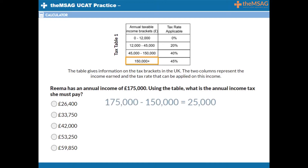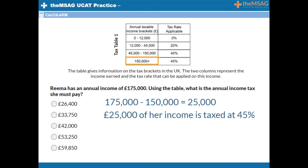£175,000 minus £150,000 means £25,000. So £25,000 of her income is taxed at 45%. £25,000 times 0.45 is £11,250. Remember though, she must pay the full amount of tax for all her income that falls into each of the lower brackets.